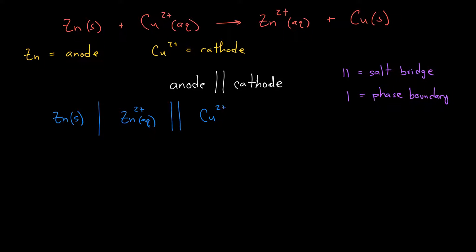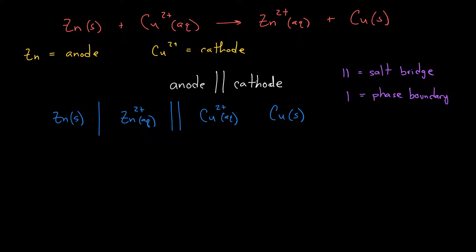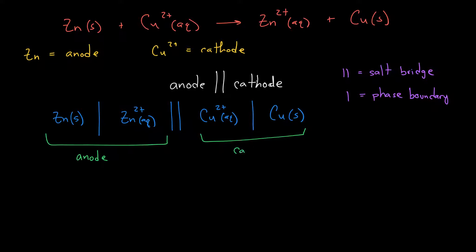Then we write the reaction at the cathode: copper two-plus aqueous goes to copper solid. Again, there's a phase change between aqueous and solid, so we replace the arrow with a single line for the phase boundary. This gives us the completed cell notation: zinc solid | zinc two-plus || copper two-plus | copper solid. The left side is the anode and the right side is the cathode.